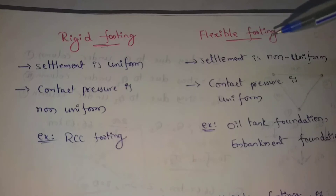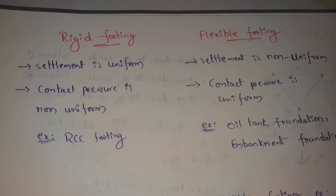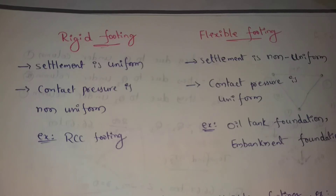For flexible footing, settlement is non-uniform. For example, if you choose clay soil, the settlement at the edges is a little lower value, while the middle center point has a little higher value, making the settlement non-uniform across the footing.